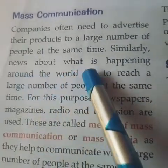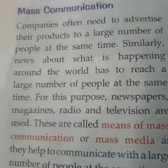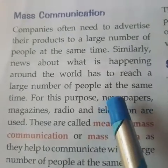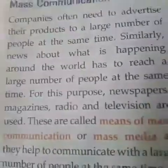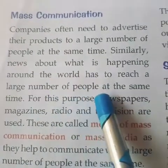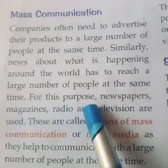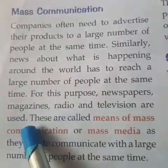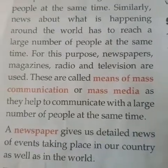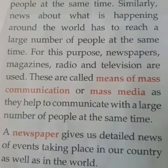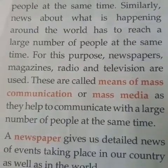Similarly, news about what is happening around the world has to reach a large number of people at the same time. All people should know what is happening in the world. So we can know many things through the news given on television. For this purpose, newspapers, magazines, radio, and television are used. These are called means of mass communication, or mass media.